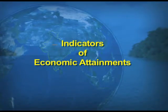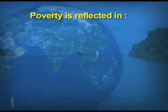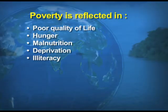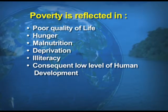Indicators of economic attainment: in the previous part we dealt with the growth of people being concerned with income — the way they earn and spend it. Poverty is reflected in: one, poor quality of life; two, hunger; three, malnutrition — meaning the body is unable to get all the required nutrients; four, deprivation; five, illiteracy; and lastly, the consequent low level of human development.